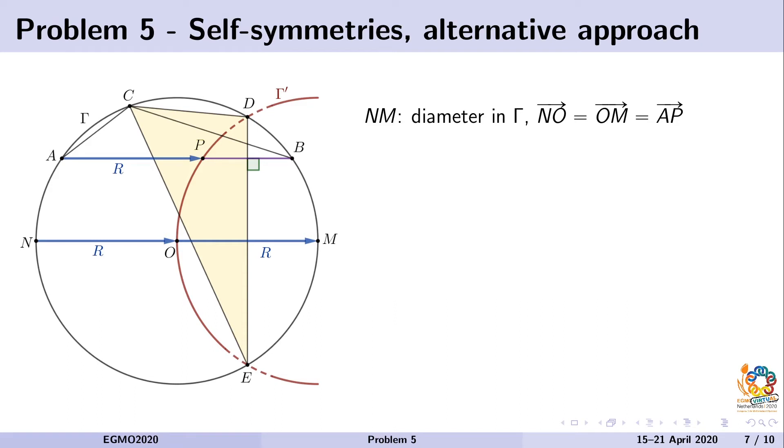For example, by constructing point M on the diameter, we see equal vectors AP and OM. Then, by translation by this vector, circle gamma goes to circle gamma prime, which has center M, and points O and P lie on this circle.